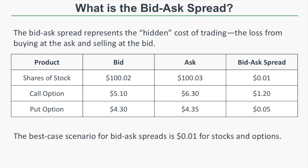On a call option with a bid of $5.10 and an ask of $6.30, the bid-ask spread is $1.20. Since an option's value is the price times 100, buying at $6.30 and selling at $5.10 results in a loss of $120 per contract — massive just for entering and exiting. On a put option with a bid of $4.30 and an ask of $4.35, the spread is only five cents, meaning a loss of just $5 per contract. Out of these products, you'd likely trade the stock or the put option and stay far away from that call option.